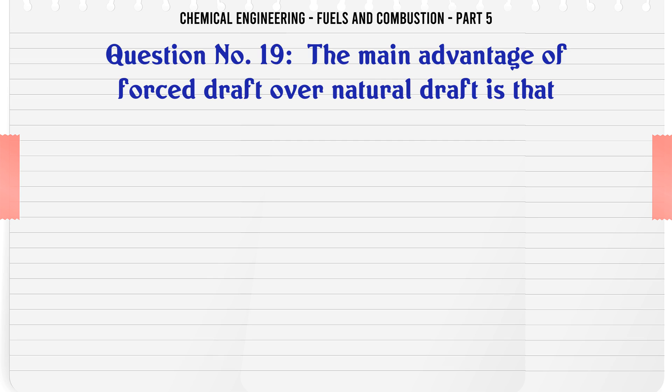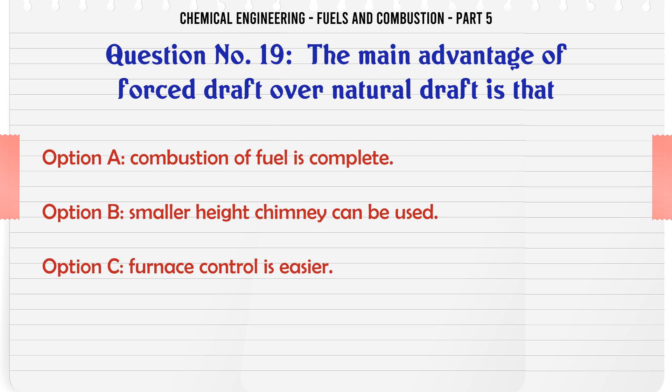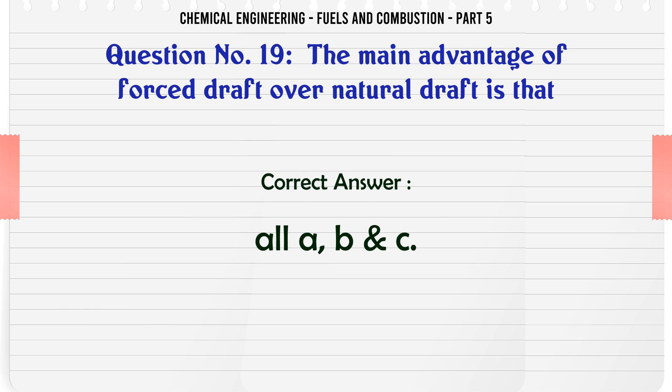The main advantage of forced draft over natural draft is that: A. Combustion of fuel is complete. B. Smaller height chimney can be used. C. Furnace control is easier. D. All A, B and C. The correct answer is all A, B and C.